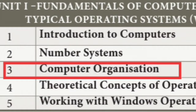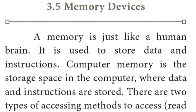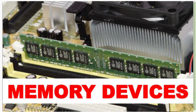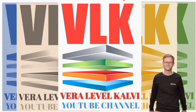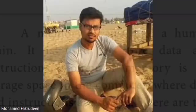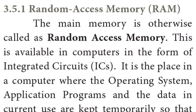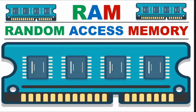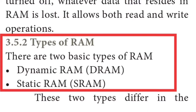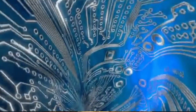In the first chapter, we have a video about 3.5 Memory Devices. We have a link in the description of this video — you can click that lesson and watch it. In this video, we will talk about 3.5.1 Random Access Memory: what is its purpose, what is its use, and what are the types of Random Access Memory.